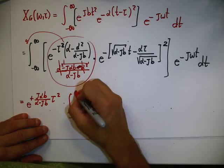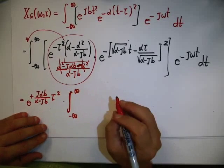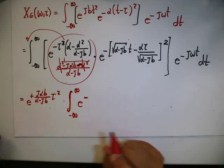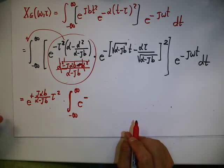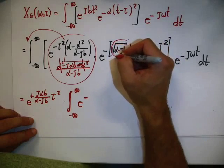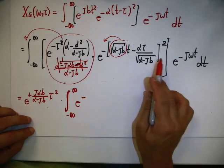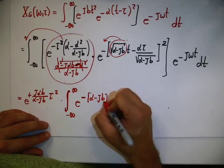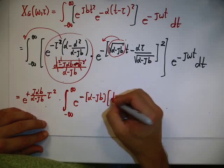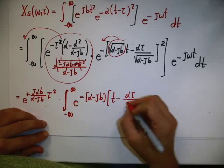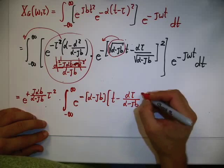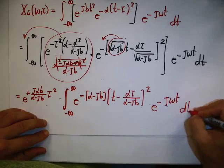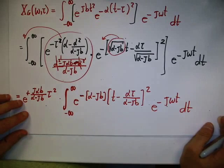The integral becomes e to the j*alpha*b / (alpha minus j*b) * tau squared, times the integral from minus infinity to infinity of e to the minus (alpha minus j*b) times (t minus alpha*tau / (alpha minus j*b)) squared, times e to the minus j*omega*t dt. We bring the coefficient outside by squaring it: (alpha minus j*b) multiplies (t minus alpha*tau / (alpha minus j*b)) squared.